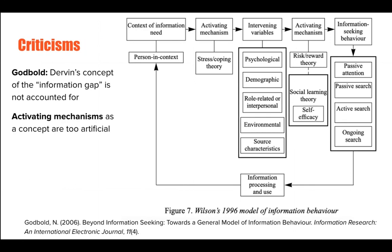Some criticisms of the updated model: one from Godbold in 2006 is that Dervin's concept of the information gap is not accounted for, because it doesn't exactly fit as an intervening variable. The information gap is about the perceived distance between oneself and the information they seek, and how that affects performing information behavior. One could argue it is somewhat incorporated in the risk-reward/self-efficacy aspect, which is why that was mentioned, but Godbold has a version of the model that more intentionally accounts for it.